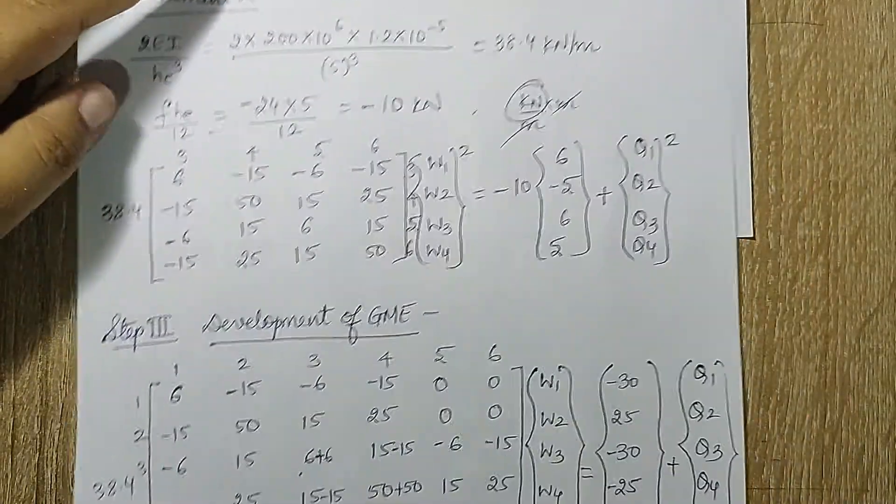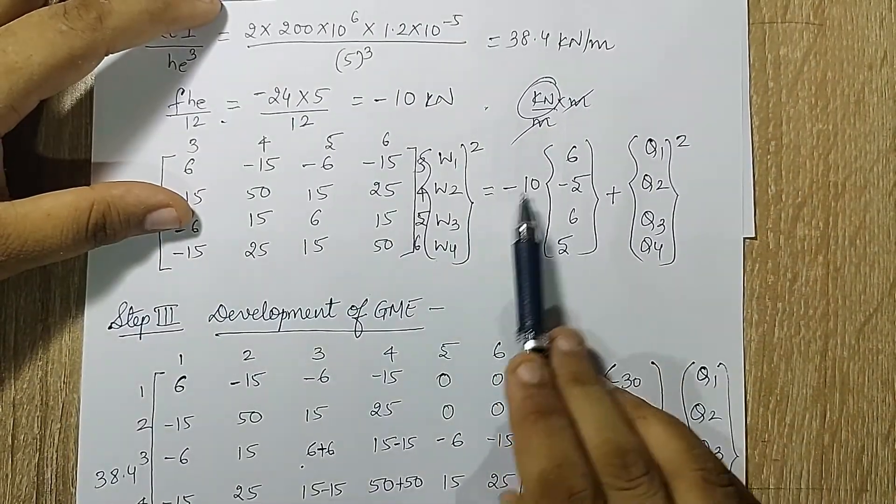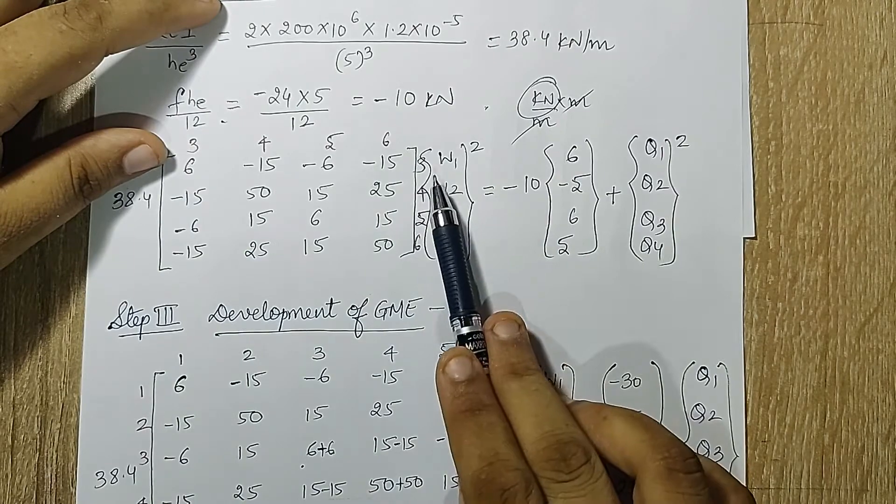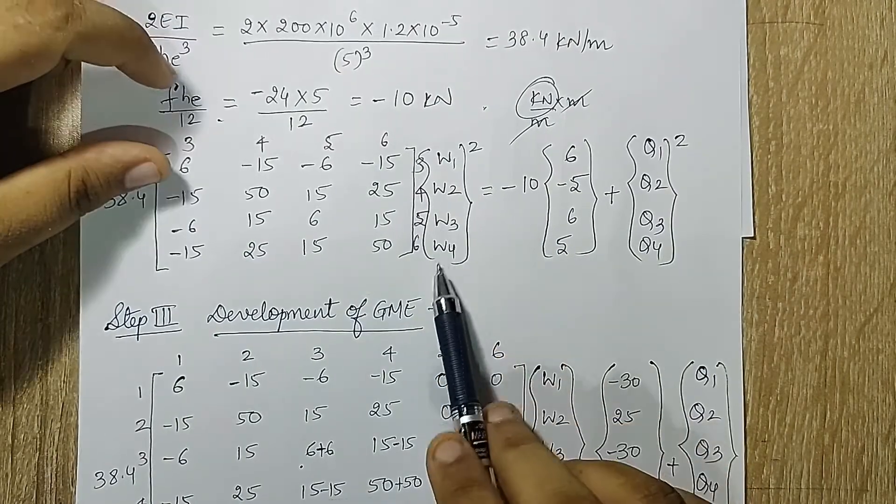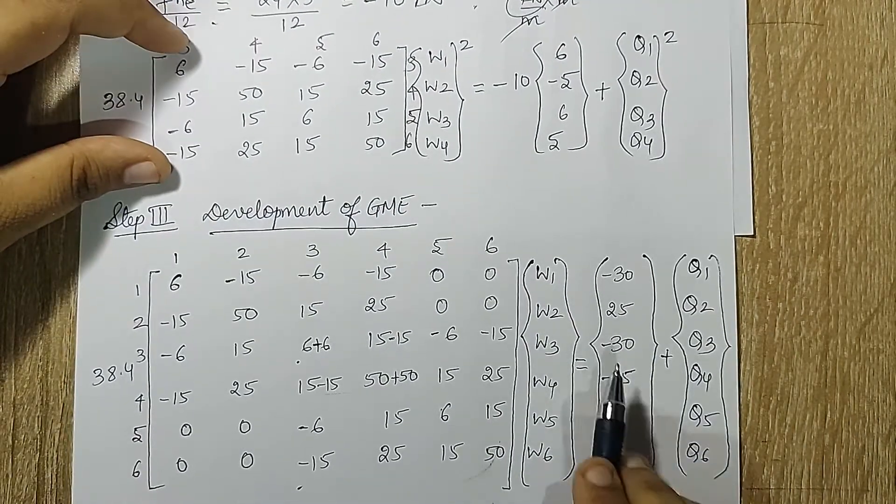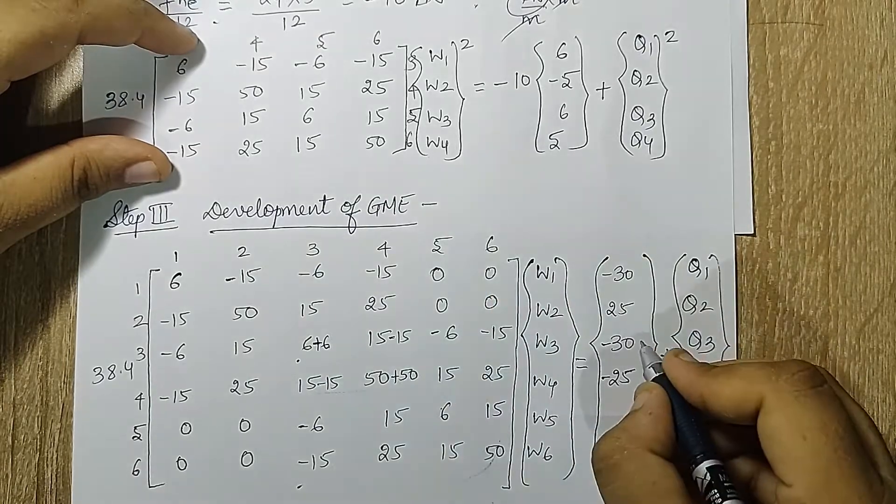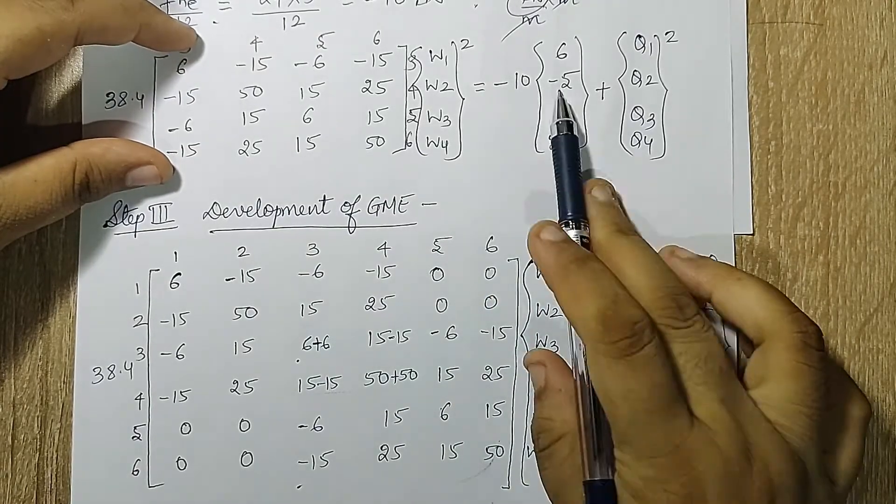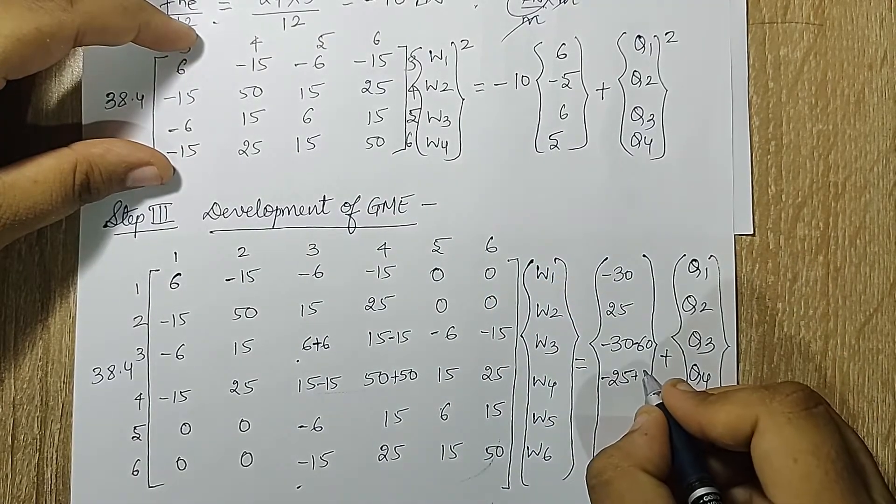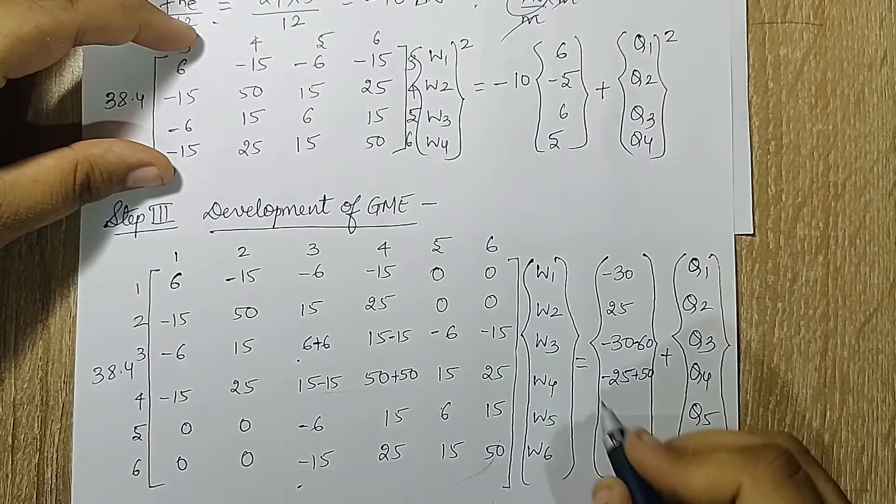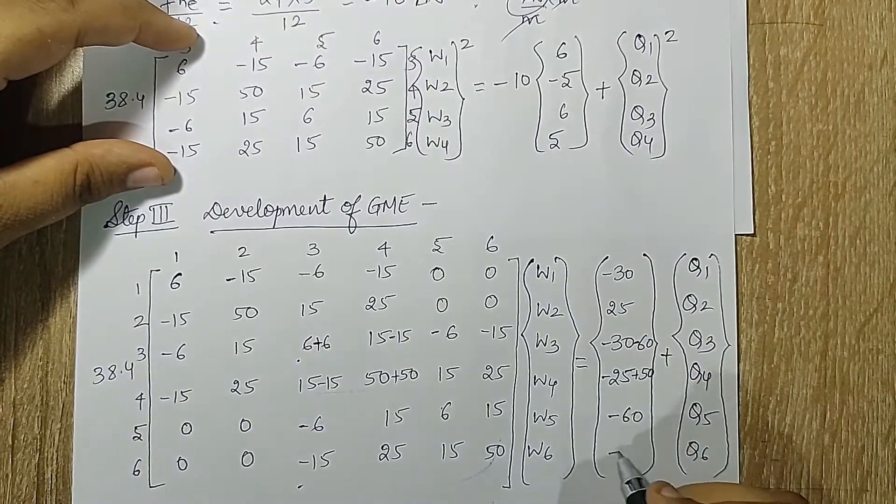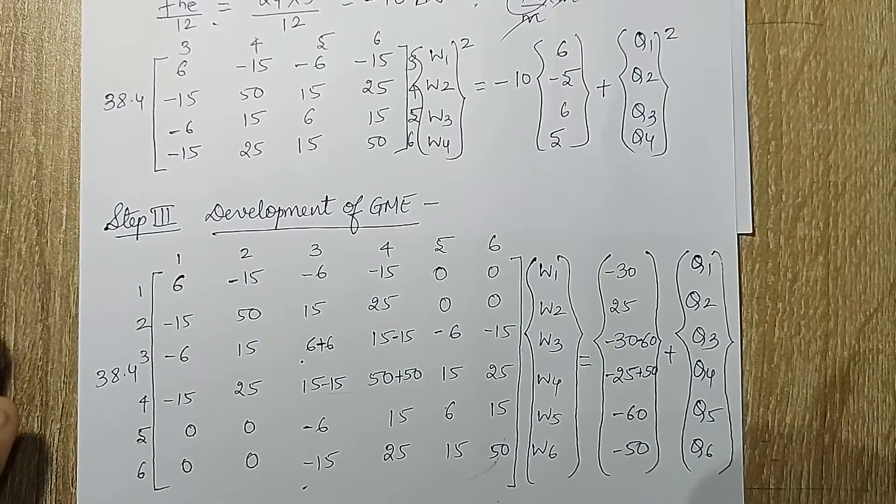Next I'll go for element 2. Here it is minus 10 multiplied with these numbers and it is at position 3,4,5,6. So I will start with 3 and this is minus 60. At 4 I'll have plus 50. Here I'll have minus 60 and minus 50. So this is how it is supposed to be placed.